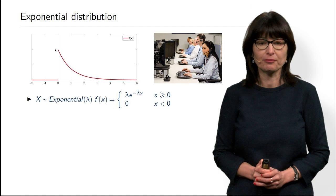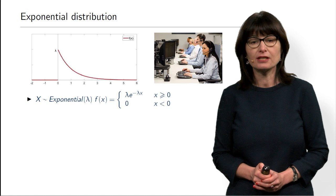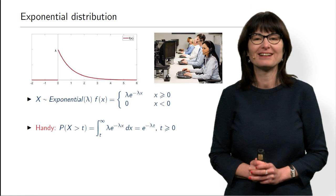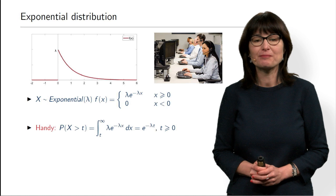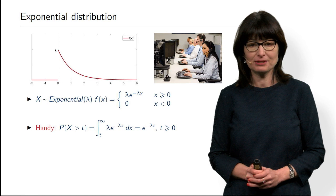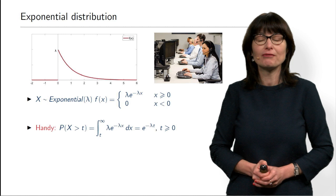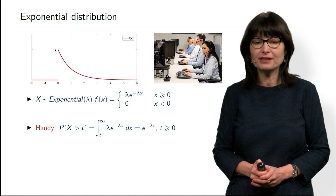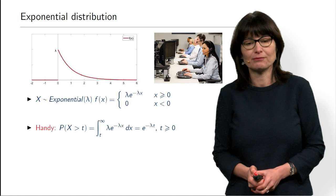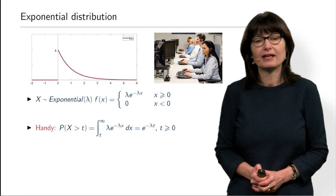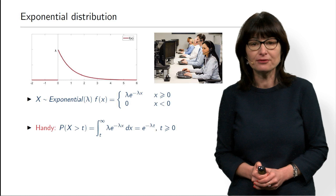As any random variable, exponential distribution also has formulas for expectation and variance. It also has a very convenient formula for this type of probability. If you want to know what is the probability that our call duration is greater than t, then we integrate the density from t to infinity — all values from t to infinity will be greater than t. What we get very easily is just an exponential function of t. So the probability that a phone call lasts longer than t decays exponentially with parameter lambda.